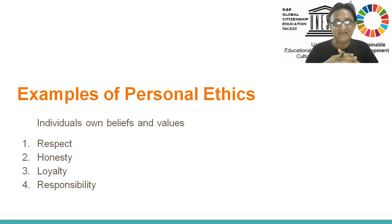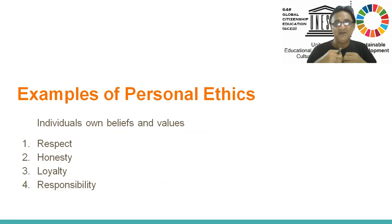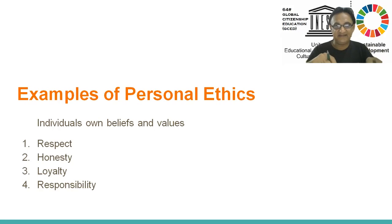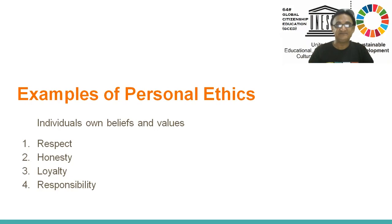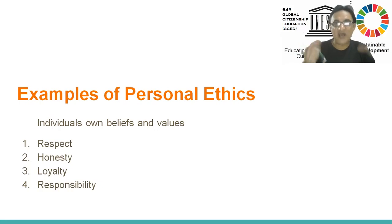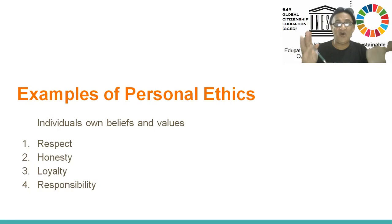Examples of personal ethics: as you can see, these are individual own beliefs and values. What are those beliefs and values? Respect, honesty, loyalty, and responsibility. Loyalty and honesty are also covering the domain of professional ethics, but to what extent that matters. Sometimes we are more sincere and honest personally. That is in the domain of personal ethics. However, professionally, you have to respond according to the statement. But how much you are sincere and honest — you can go beyond the professional ethics.